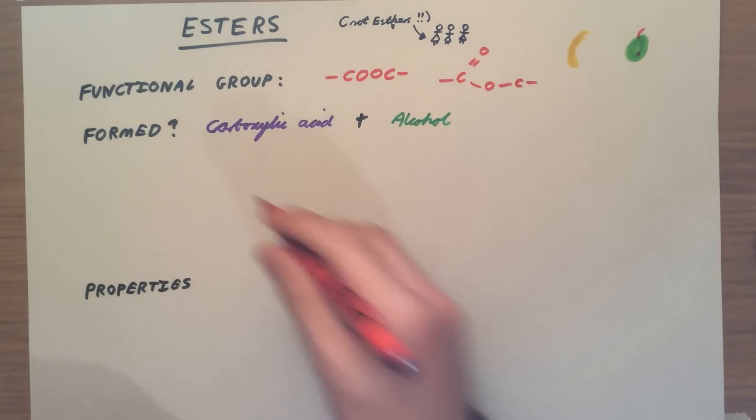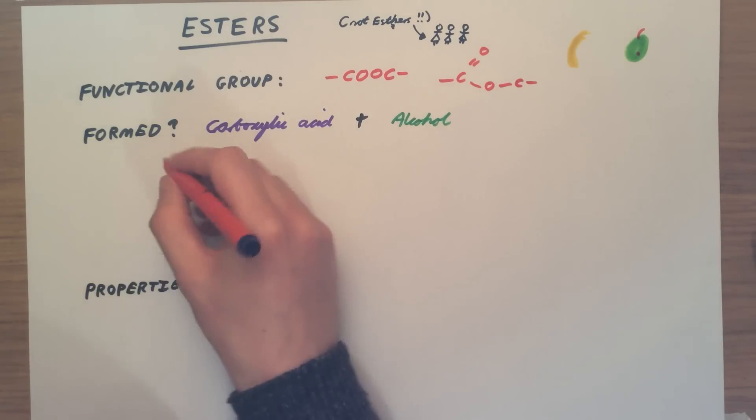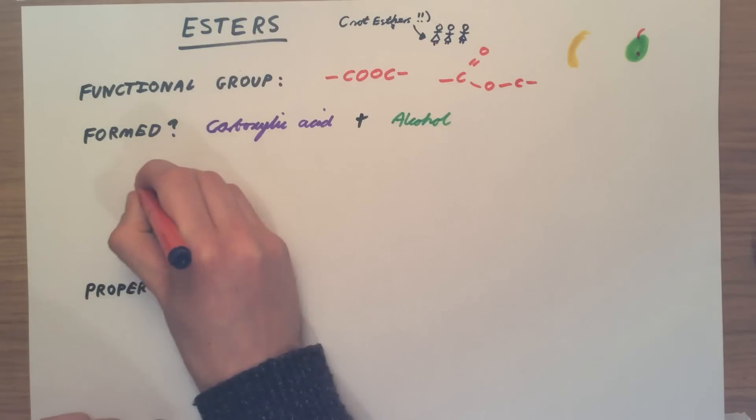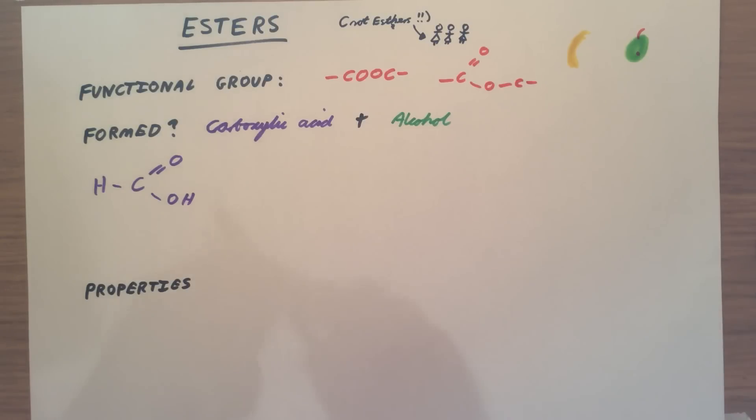Let's imagine we have the carboxylic acid methanoic acid - let's keep it nice and straightforward to start with. So we're going to have a carboxylic acid, and let's have ethanol that we're reacting with it.